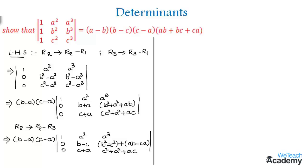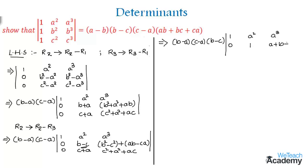The term (B squared minus C squared) is in the form of a difference of squares, so using the formula we get (B plus C)(B minus C). From the remaining term we can also factor out (B minus C). So we take (B minus C) as the common factor from the second row. This gives (B minus A)(C minus A)(B minus C) outside, and the second row becomes 0, 1, and (A plus B plus C). The third row remains unchanged.